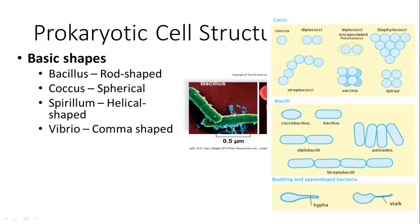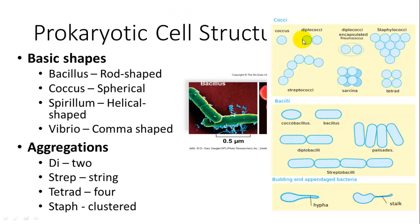Bacteria are also classified structurally by their shape and how they aggregate. The basic shapes are Bacillus, Coccus, Spirillum, and Vibrio, though these aren't the only shapes — just the most commonly used. For aggregations: two bacteria together form a 'di' grouping — for example, Diplococci is two Coccus-shaped bacteria. Streptococci form a string arrangement, and Staphylococci form a cluster. The same aggregation naming can be applied to other shapes as well.